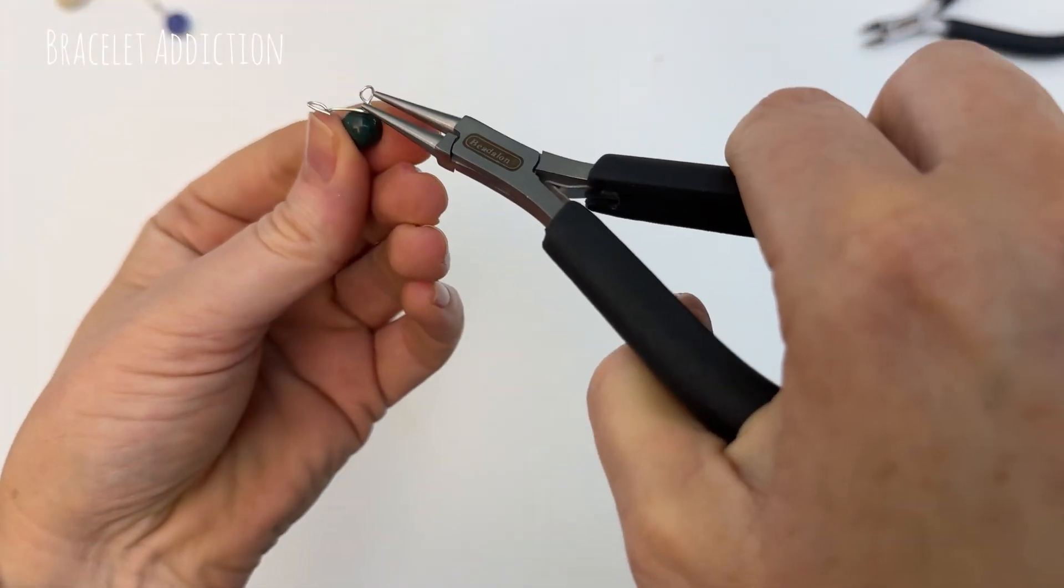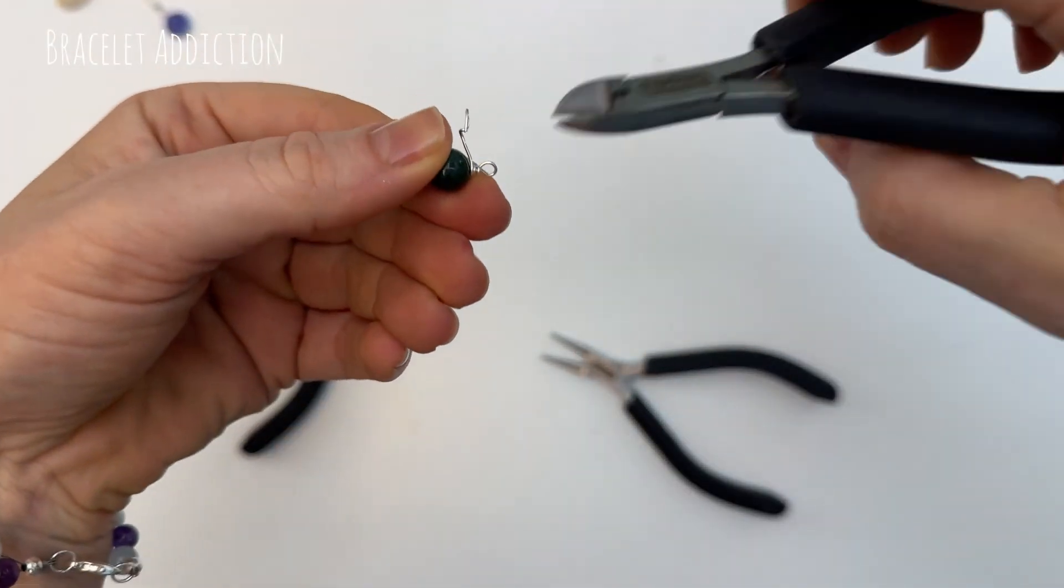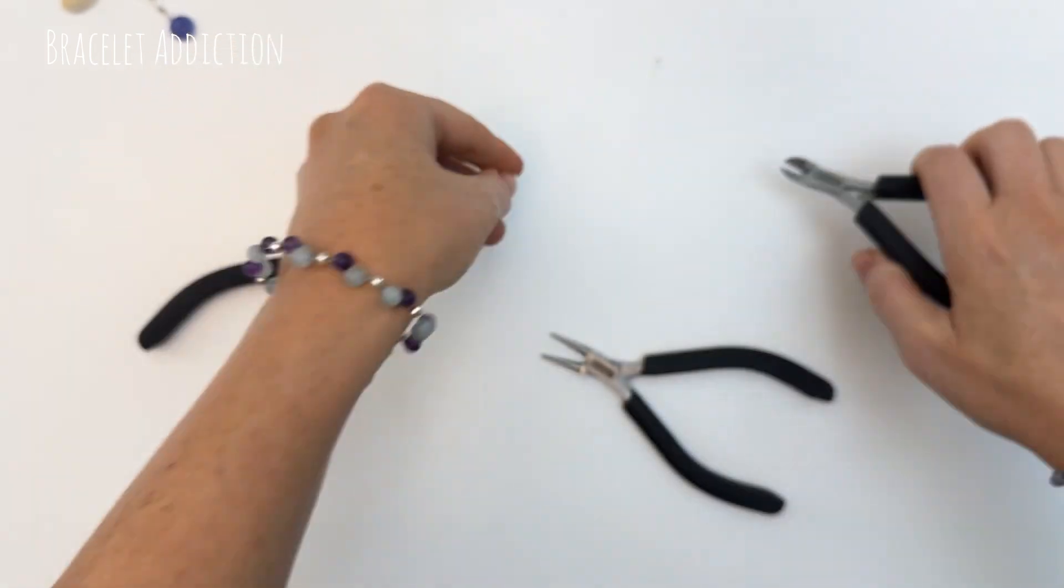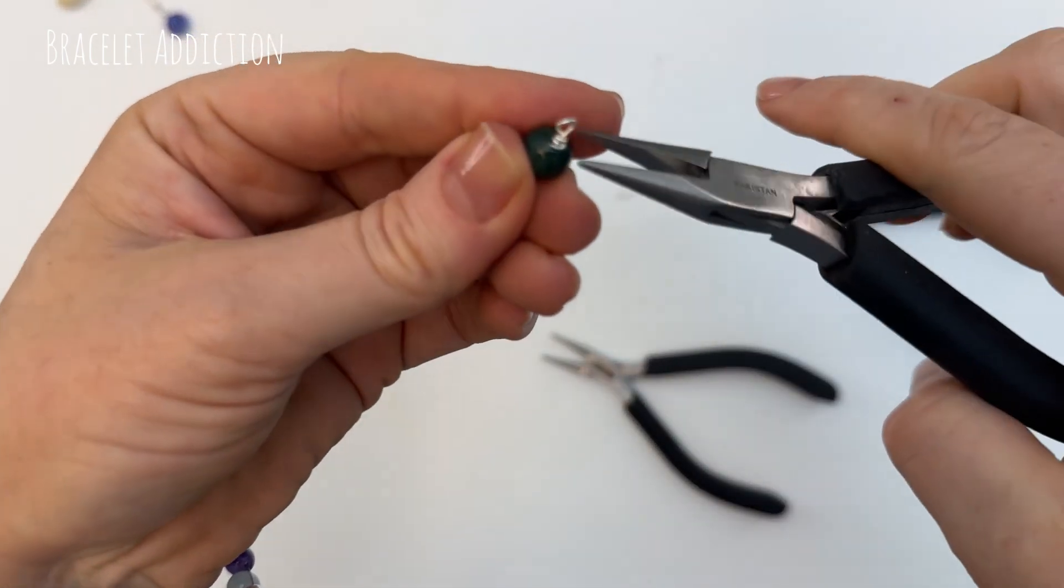Once you're happy with the connection there you can cut this little tail off nice and short and crimp it in tight so there's no sharp edges.